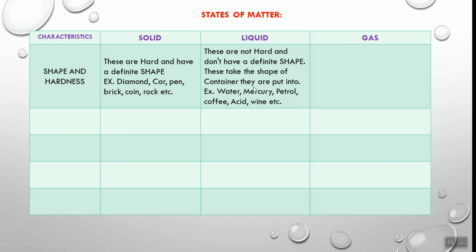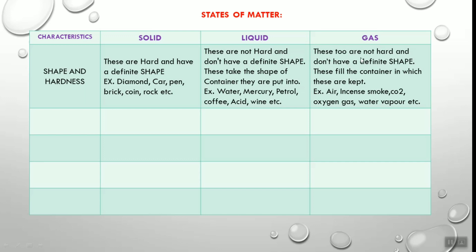Examples of liquids include water, mercury, petrol, coffee, acid, and wine. Mercury is the only metal that is in the liquid state. All liquids are not hard and don't have a definite shape — they take the shape of their container. Gases are also not hard and don't have a definite shape. Gases fill the container in which they are kept. Examples include air, smoke, carbon dioxide, oxygen, and water vapors.